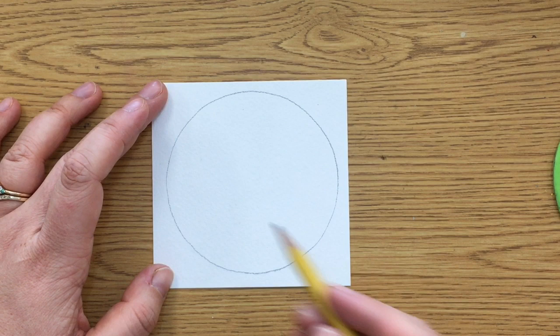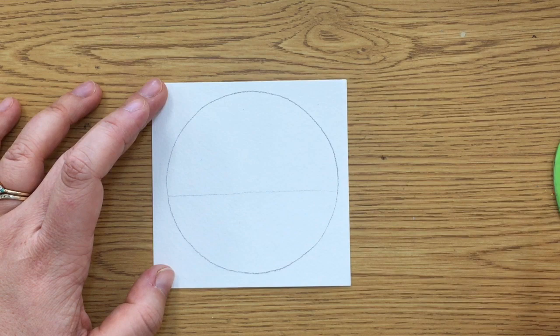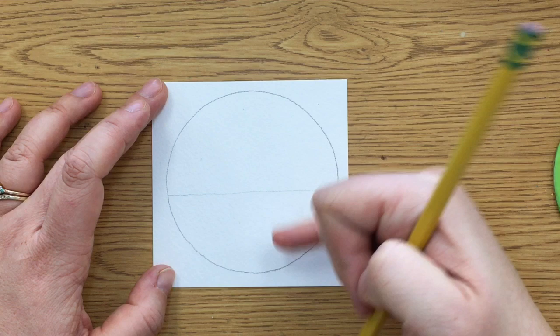And then the first thing you're going to do is draw a horizon line, somewhere right around there. Draw a line across. Hopefully you can see that. So that's going to separate our land from where our mountain is.